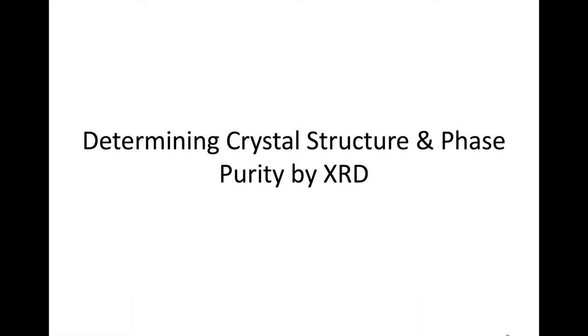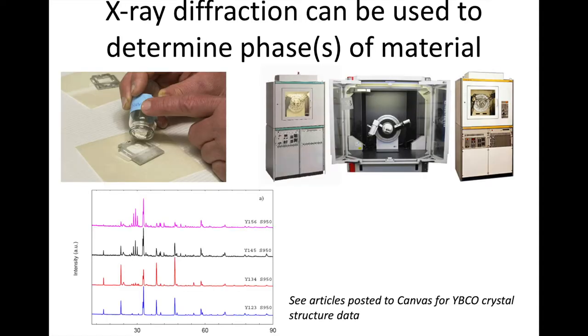Let's look at how we determine crystal structure and also the presence of impurities through X-ray diffraction, or XRD. XRD is something we use to determine the phase or phases that exist in a material. We have a whole lab on this in MSE 408, so we're not going to get the same level of detail here, but we will use it as a tool to see differences in the different states of the powder.